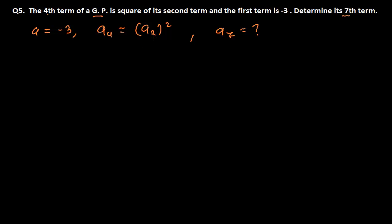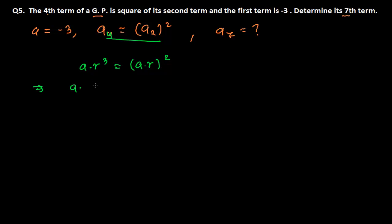There is only one way forward — the fourth term is the square of the second term. In a GP, the fourth term is a times r to the power 3, and the second term is a times r. So squaring the second term gives a squared times r squared. Setting them equal: a·r³ = a²·r².